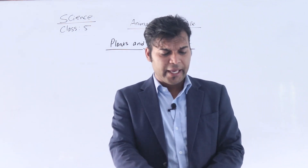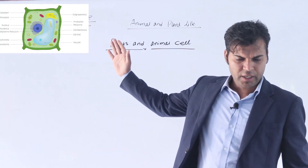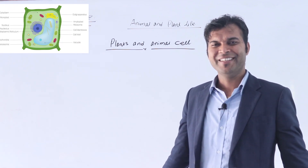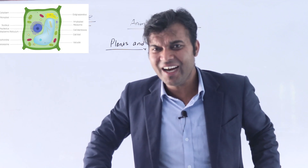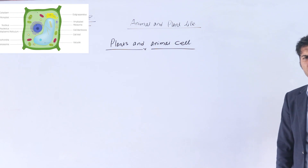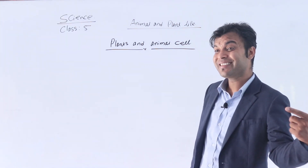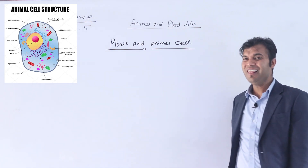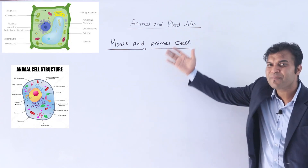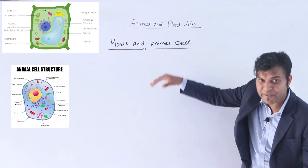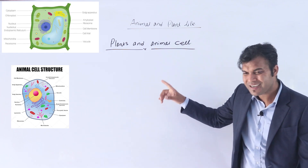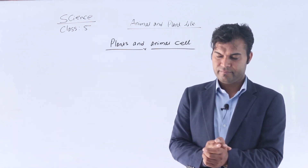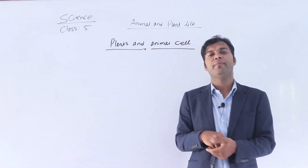Now we move towards the next topic: plant cells and animal cells. Those cells which are found in a plant body are called plant cells, and those found in an animal body are called animal cells. Under the microscope, plant cells are easier to see than animal cells. Plant cells are easier to see with respect to animal cells using the microscope, because the size of a plant cell is larger than that of an animal cell.